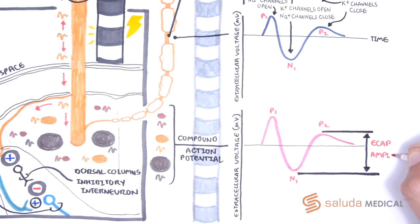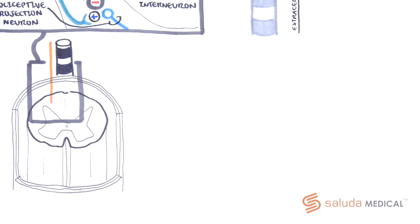In case you forgot, the action potential is an all or nothing response, meaning a neuron does not fire a larger or smaller action potential depending on the stimulus. Therefore, the ECAP amplitude is indicative of the relative number of fibers that have been activated in the spinal cord.